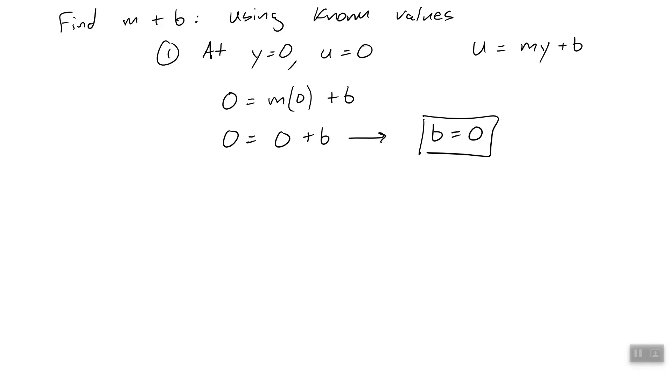All right, so we solved the intercept b. Let's solve then what our slope is by applying the other boundary condition. That's what we call these known values, our boundary conditions.